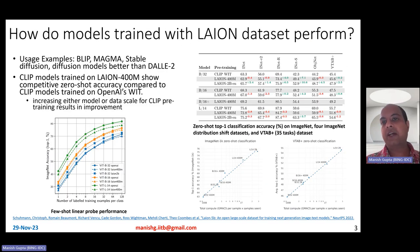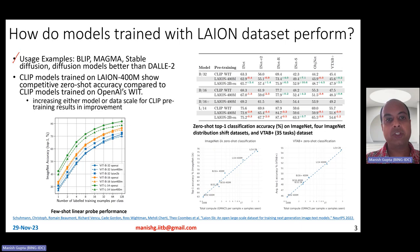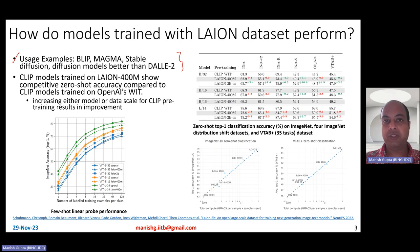How do models trained with the LAION dataset perform? The main goal for releasing LAION was to have a publicly available dataset to train CLIP models using public data. After its release, various subsets have been used to train several models like BLIP, MAGMA, Stable Diffusion, and diffusion models better than DALL-E 2 itself. These models have become very popular — BLIP is widely used, and Stable Diffusion is very popular as a latent diffusion model for image generation.